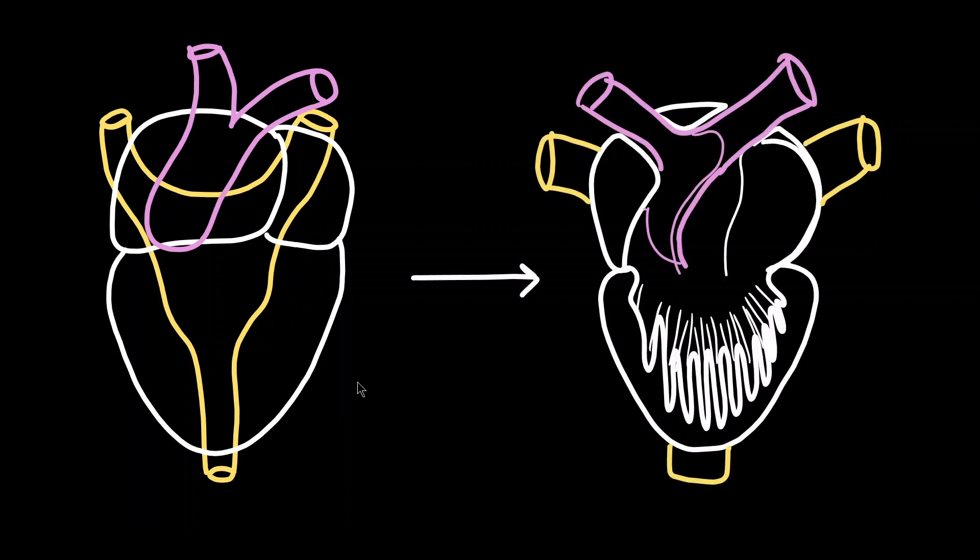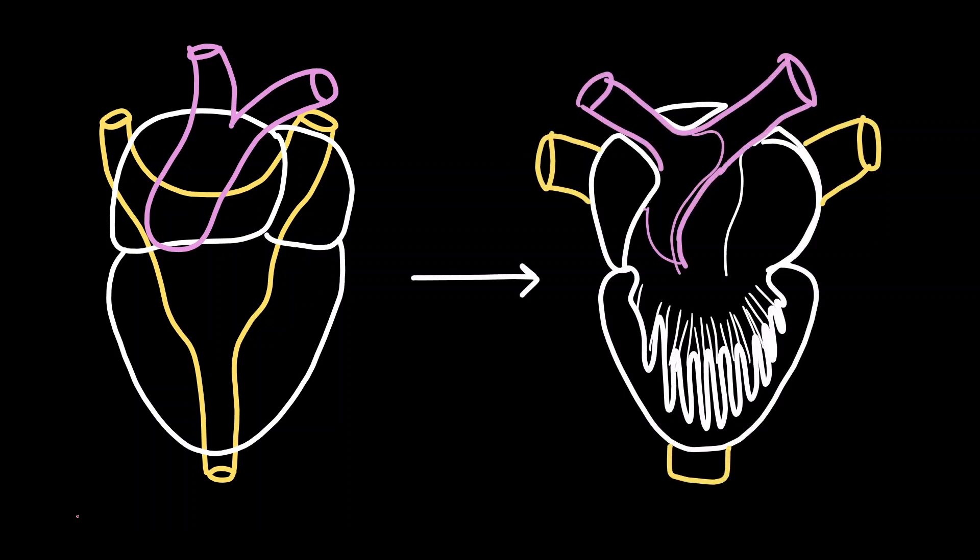So the way this works is that your sinus venosus, it brings blood from different parts of the body. These are from the upper parts of the body and this is from the lower regions of the body. And they are connected to the right atrium. So deoxygenated blood is found in the right atrium. You also have blood vessels coming in from the lungs which are actually bringing oxygenated blood.